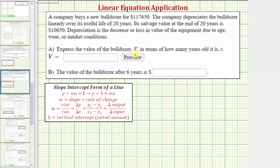And because we're writing V in terms of T, each ordered pair will be in the form of T comma V, where T is the age in years and V is the value. So looking back at the given information,